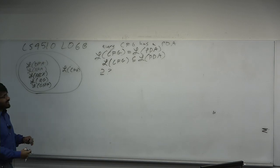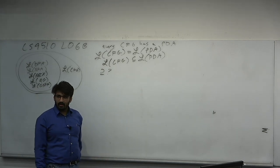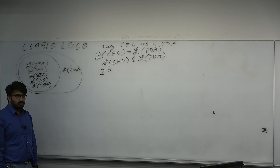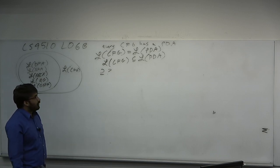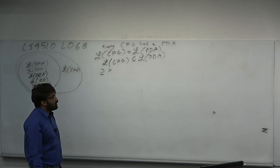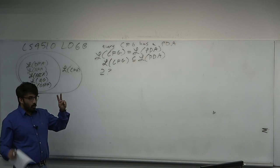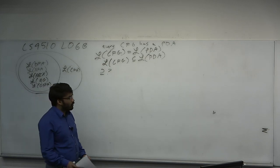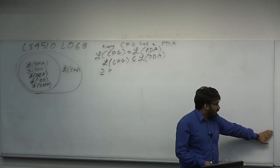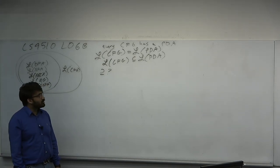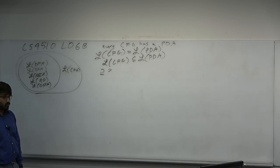The reverse implication is going to take some time — it's a little bit harder. This direction is easier because a PDA is more like an algorithm than you think; it's something you know how to write code for. To program a PDA to do the job of a CFG is kind of easy. To program a CFG to do the job of a PDA is not easy — that proof is a little involved and will be perhaps the most formal proof in the entire class.